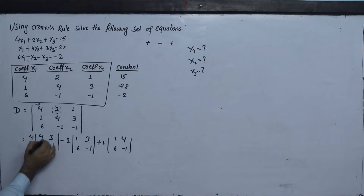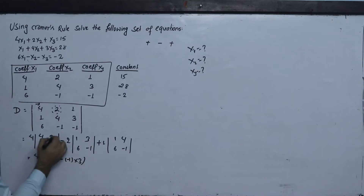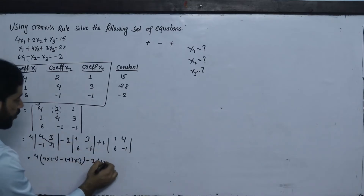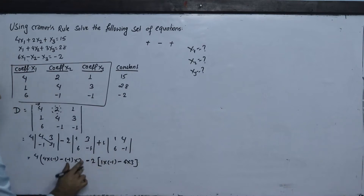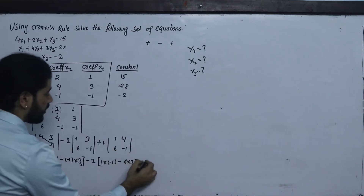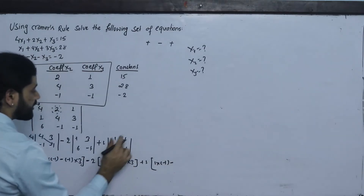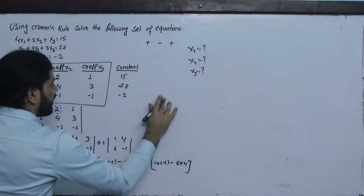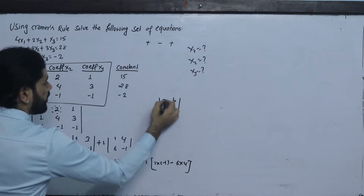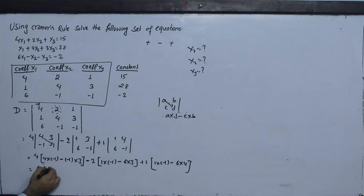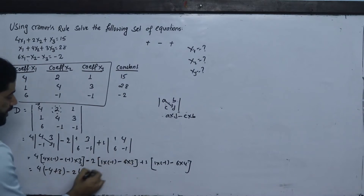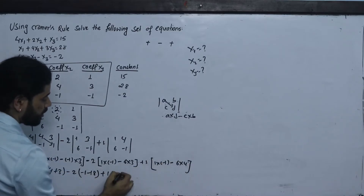For a 2x2 determinant, the formula is A times D minus C times B. So: 4 into minus 1 minus minus 1 into 3, minus 2 times (1 into minus 1 minus 6 into 3), plus 1 times (1 into 4 minus 6 into 4). This gives: minus 4 plus 3, minus 2 times (minus 1 minus 18), plus 1 times (minus 1 minus 24).